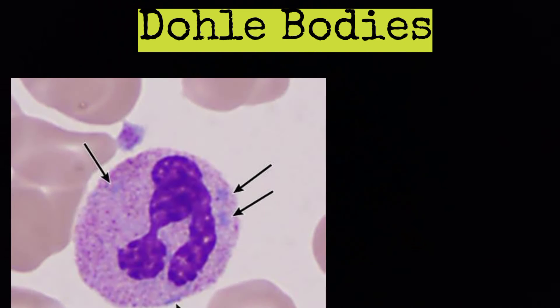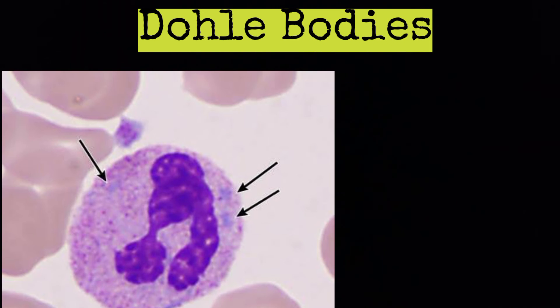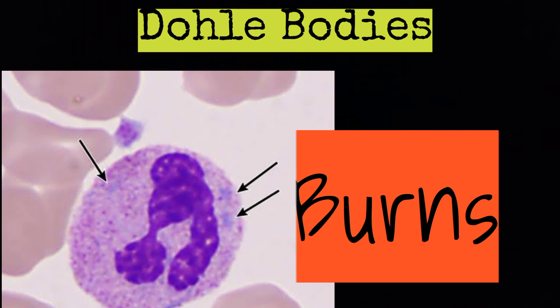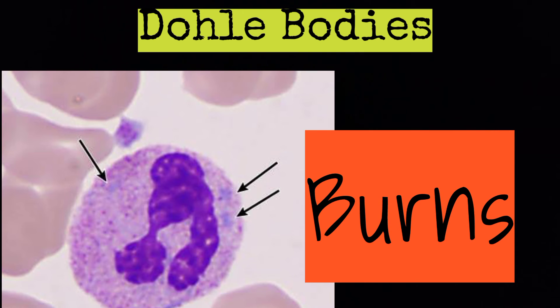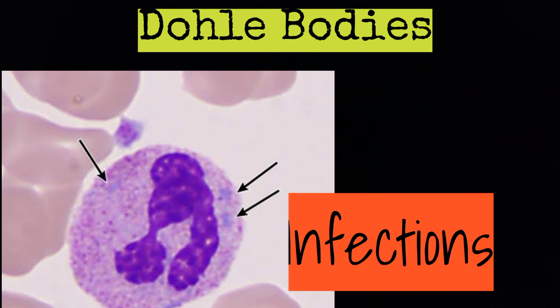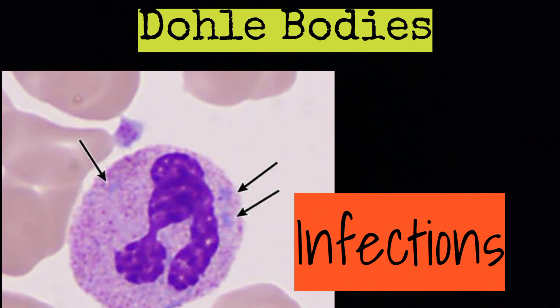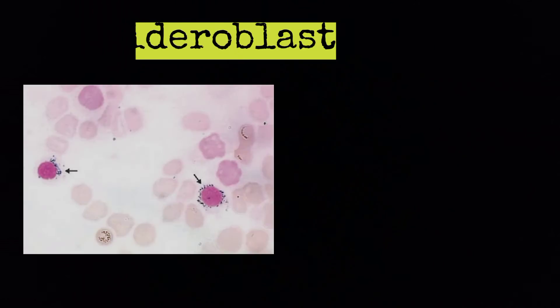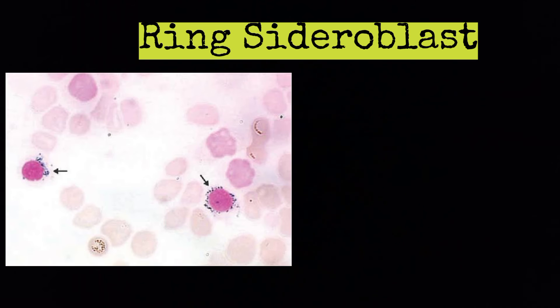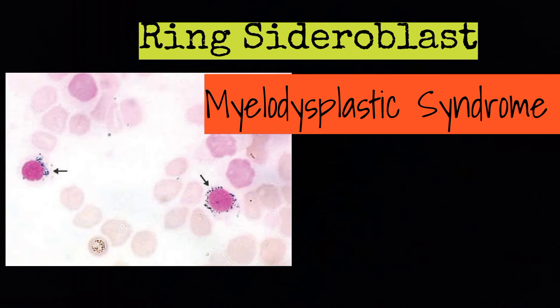Döhle bodies are found in neutrophils — you have to learn neutrophils — and are present in burns and infections. Ring sideroblasts are present in sideroblastic anemia and myelodysplastic syndrome.